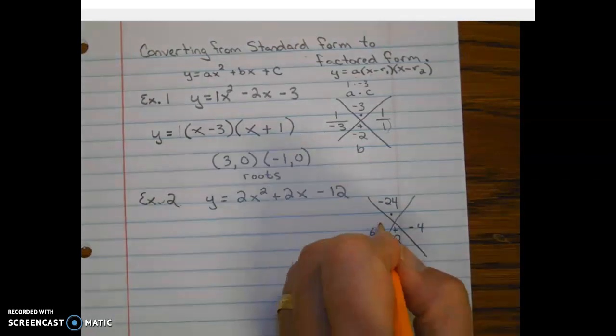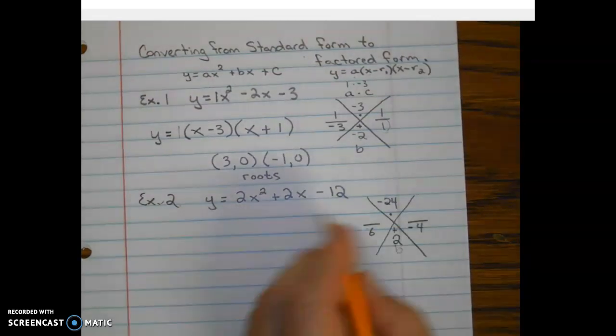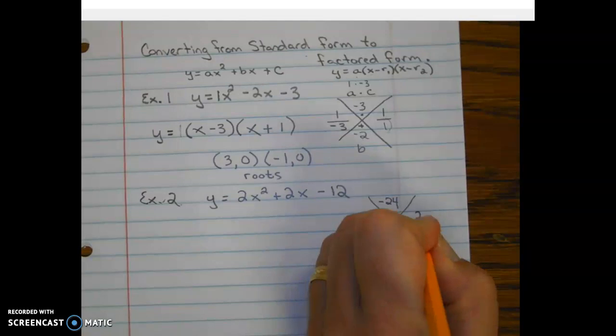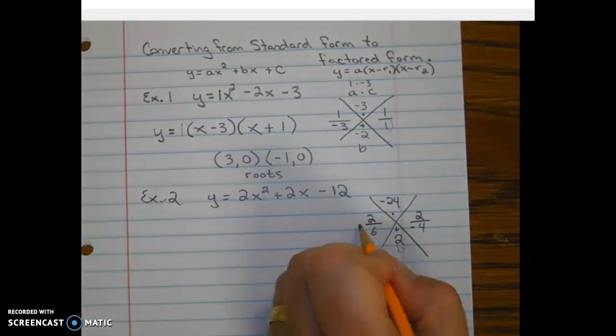All right. So we found our two numbers. And now we're going to put our A value on the top of our ratios. And then we reduce if we can. And we can.